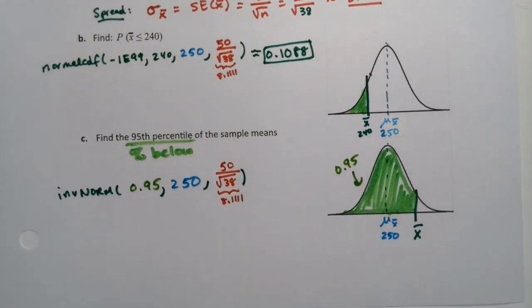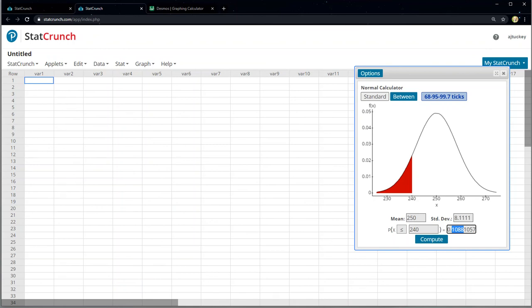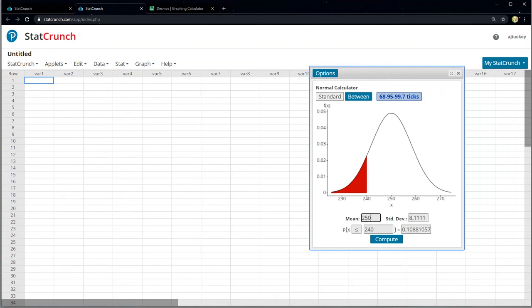This time I'll do StatCrunch first. If I go to StatCrunch, I still have the 250 and the 8.1111 sitting there. I don't know the X value. That's what I'm looking for. But over here, I could type 0.95, enter. And there it tells me, 263.34. I'm going to write that down. Actually, it said it only wanted one decimal place. So I'm going to go with one decimal place. So 263.3.